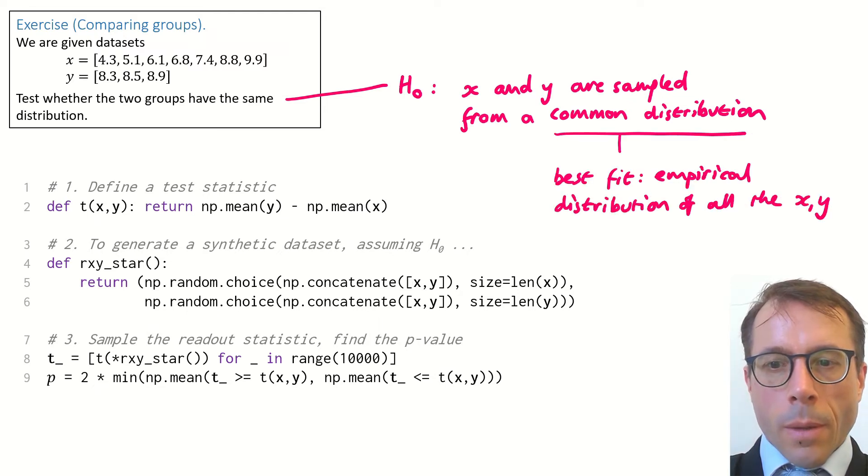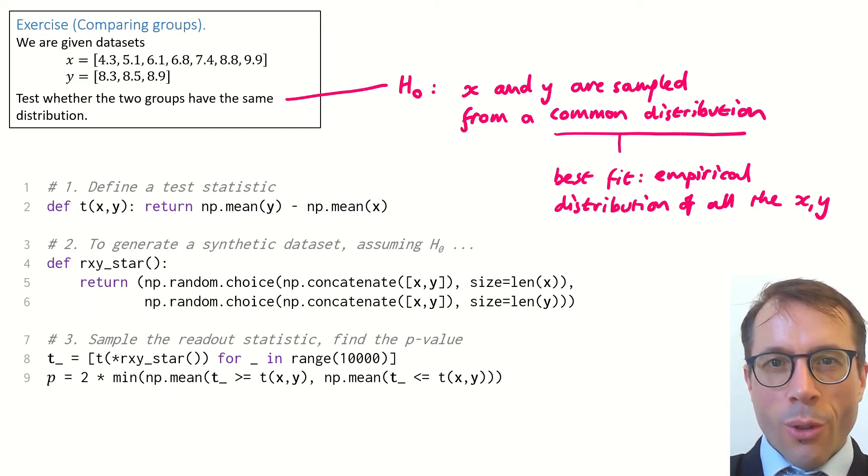It's simple. If all the values, all the X and Y, come from a common distribution, then the best possible fit is the empirical distribution of all of those values.